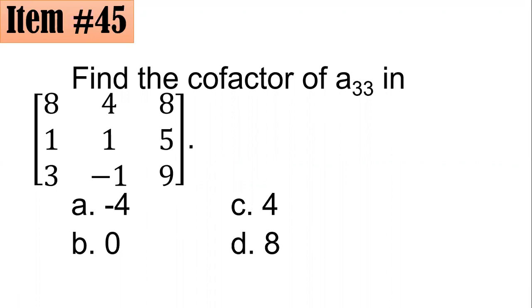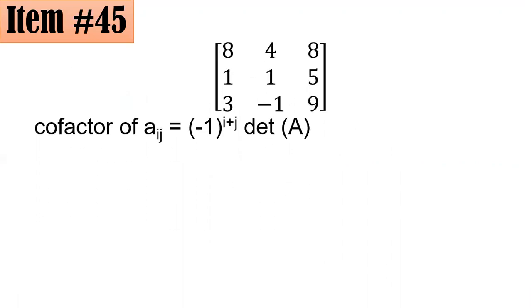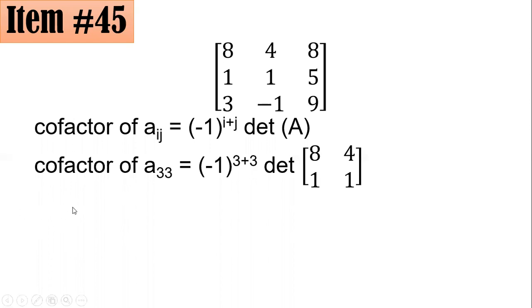So to determine the cofactor of this matrix, we have to use the formula. The cofactor of A, I, J is equal to negative 1 raised to the sum of I and J, multiplied by the determinant of A. Take note, I here represents the row, J here represents the column. And to get the A here, we have to erase the I-th row and the J-th column. So since we are looking for the cofactor of A sub 33, to do this, we will delete the third row and the third column. The first number is for the row and the second number is for the column. So delete this row. Delete also this column. That's why we have 8, 4, 1, 1 left here as your matrix.